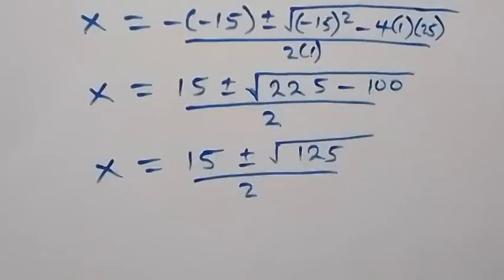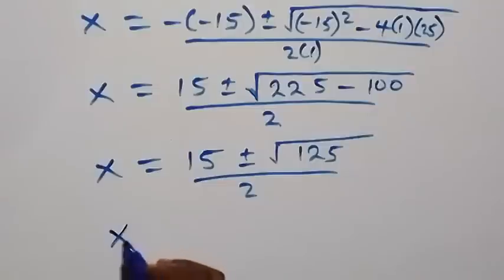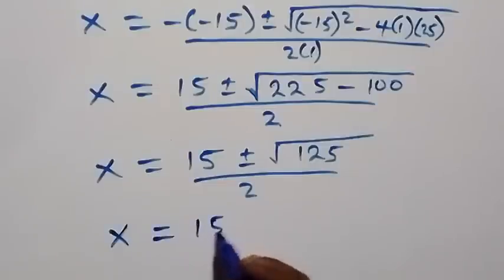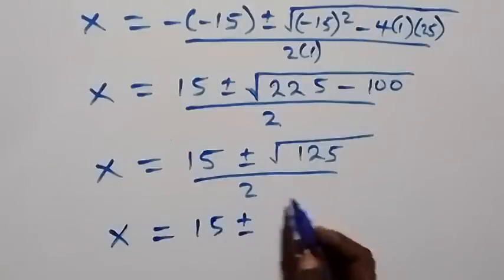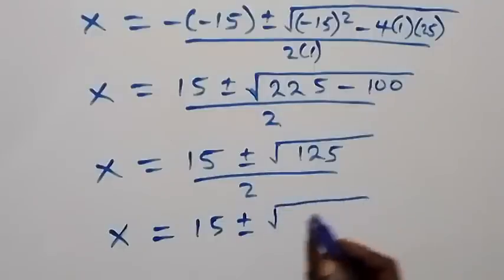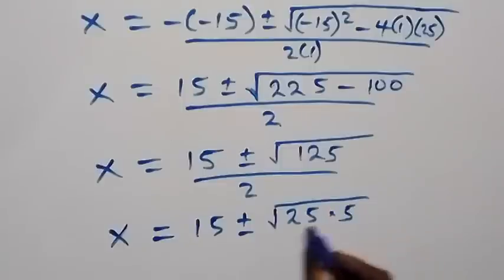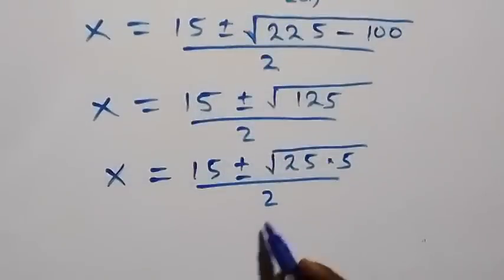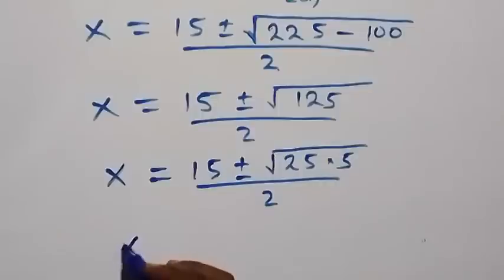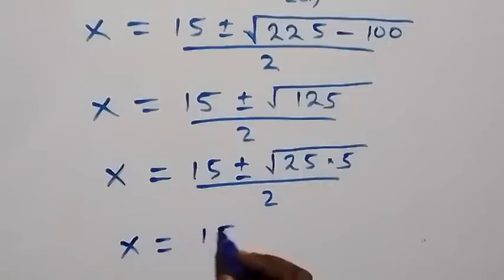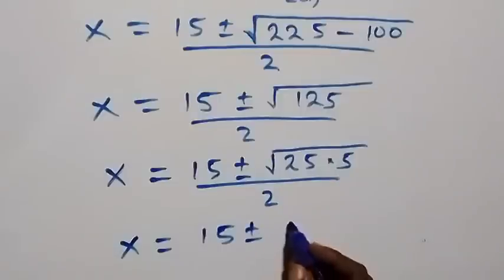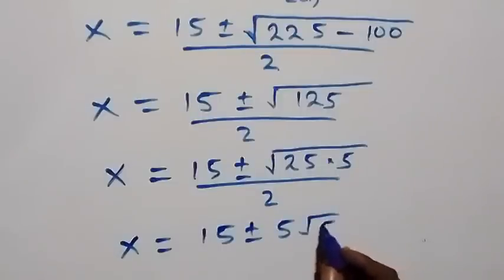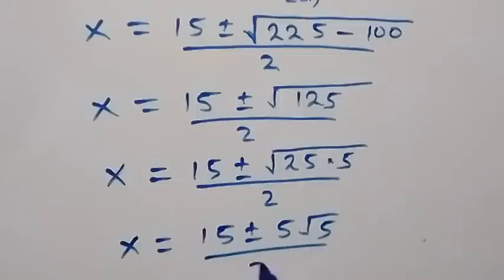We can write √125 as √(25 × 5) = 5√5. So we have x = (15 ± 5√5) / 2. That gives us two values of x.